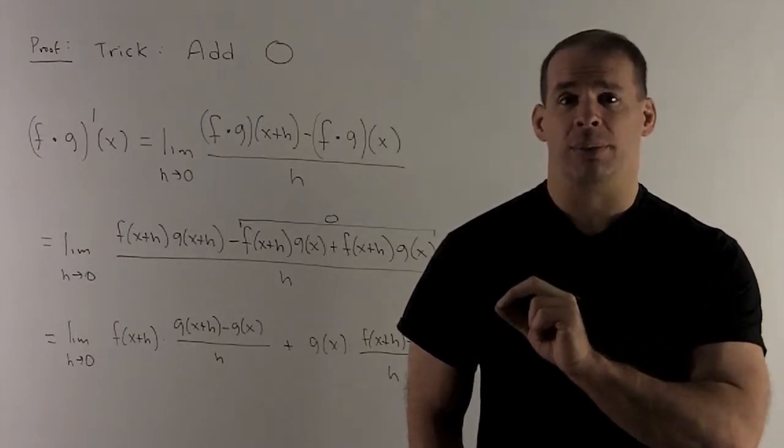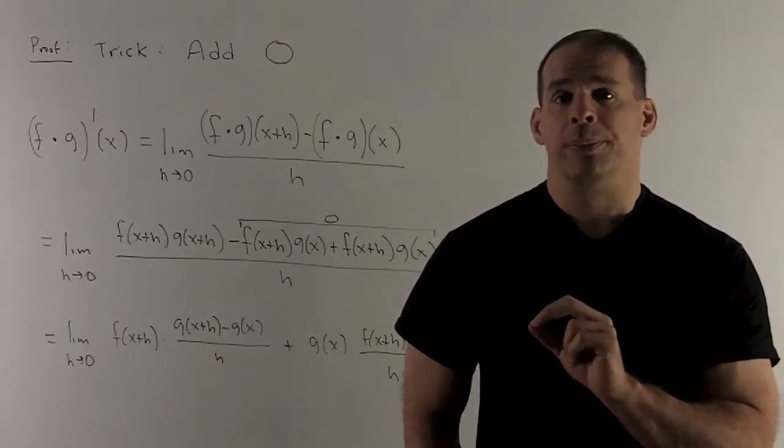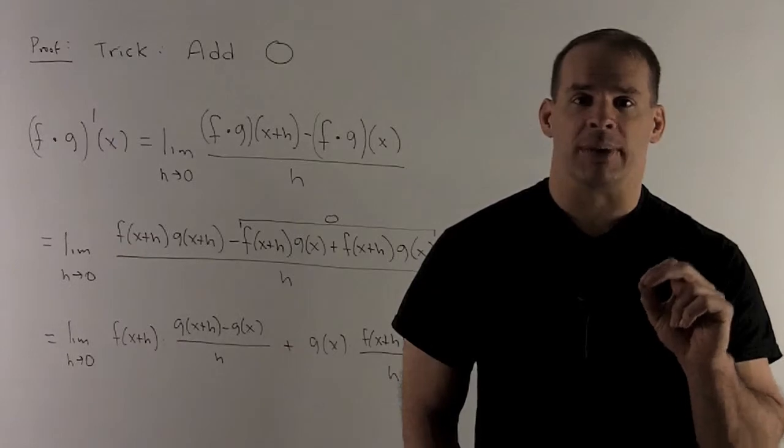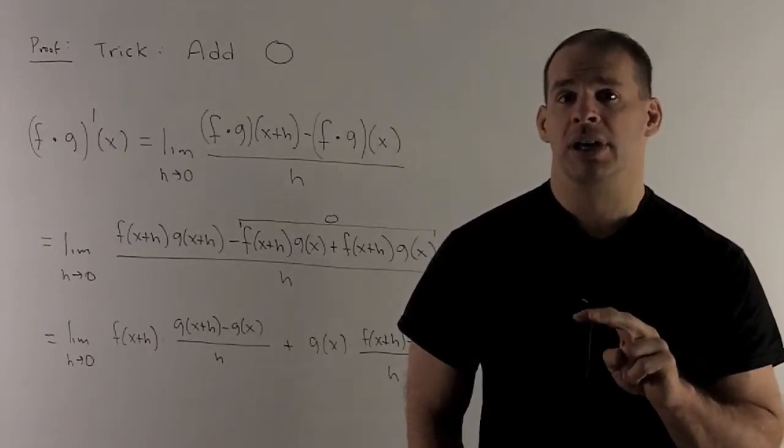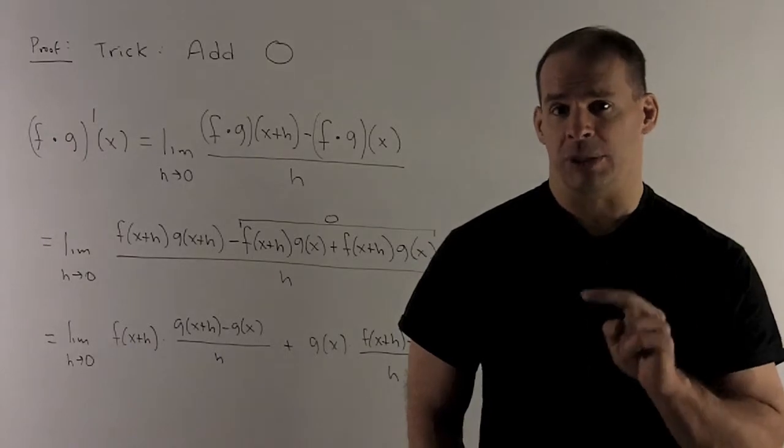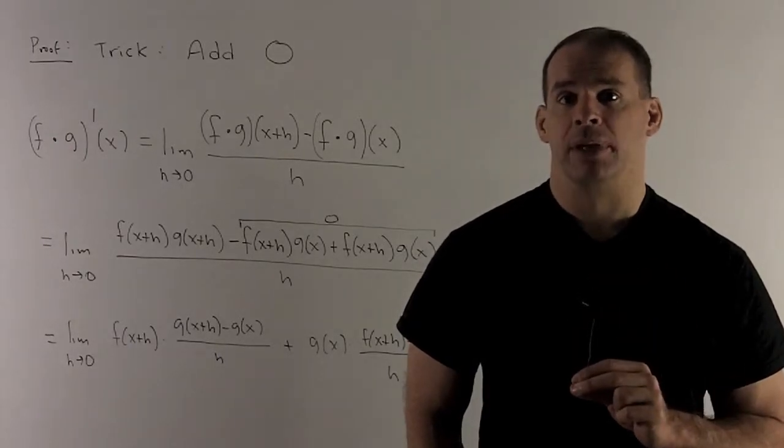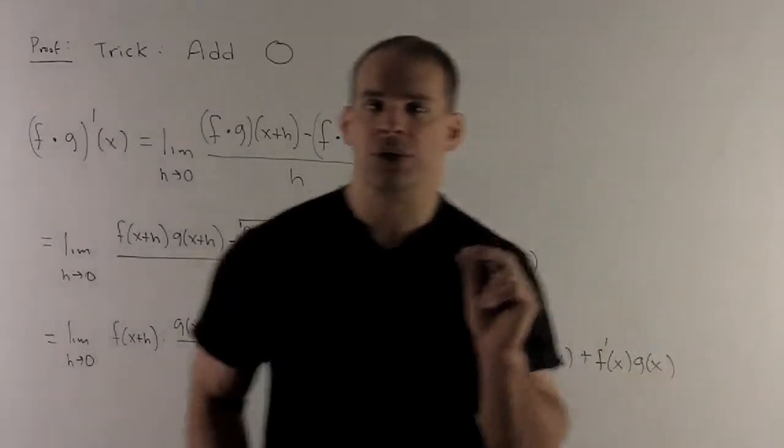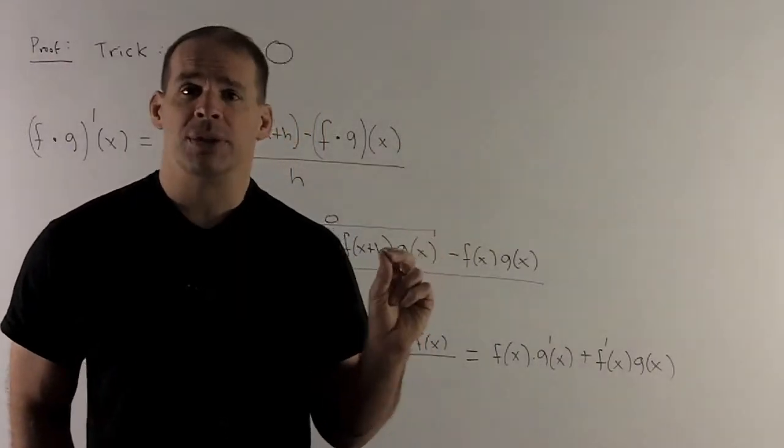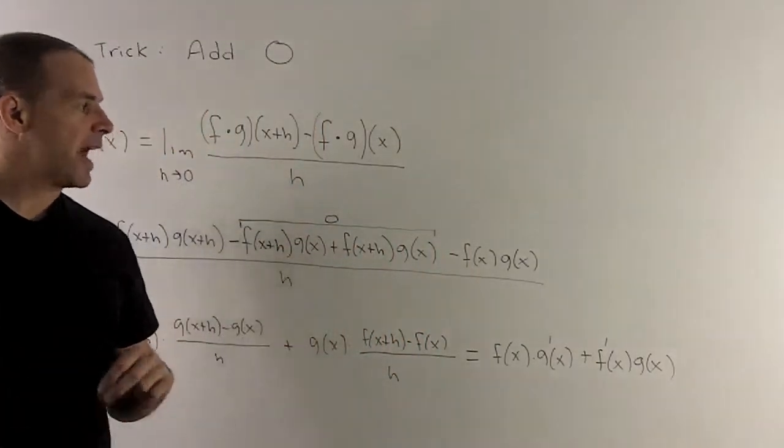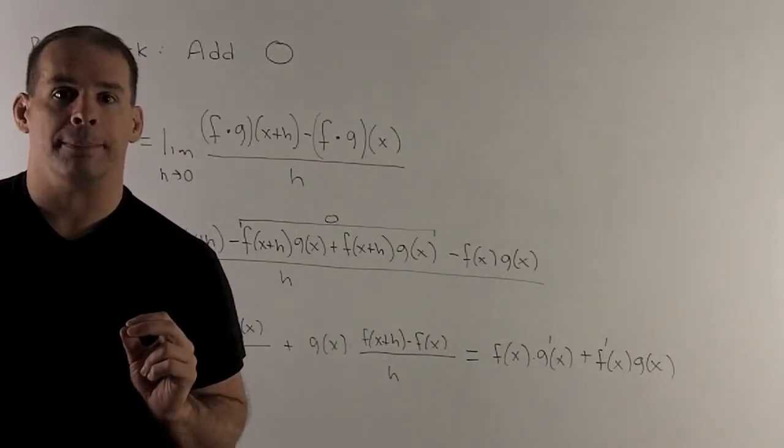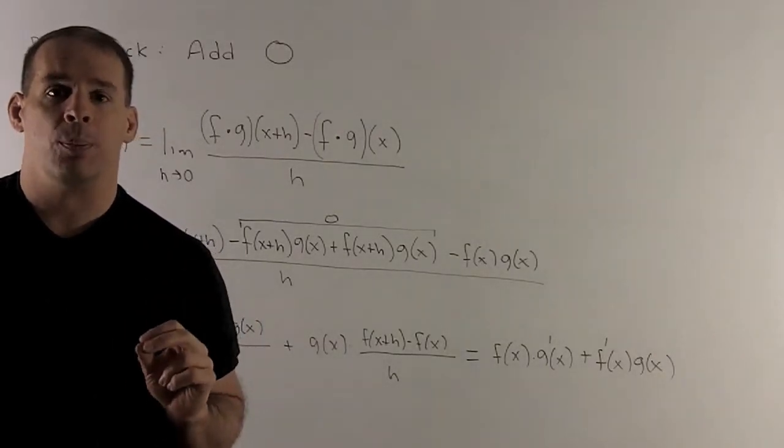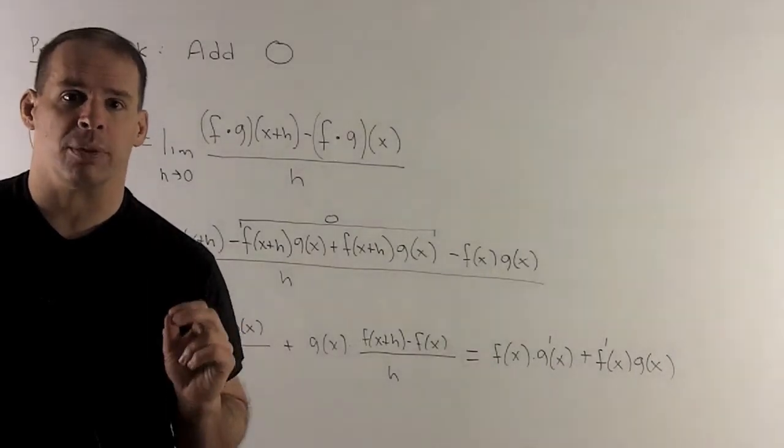You'll notice that f(x+h) can be factored out, and then the gadget that's left over on the first two terms is going to be the thing that goes to g' as I take the limit. Similarly, if you go to the other two terms, we're going to be able to factor out this g(x), and then what's left over is going to be the gadget that goes to f'. So when I take the limit, what's going to be left over is going to be our rule for the product.